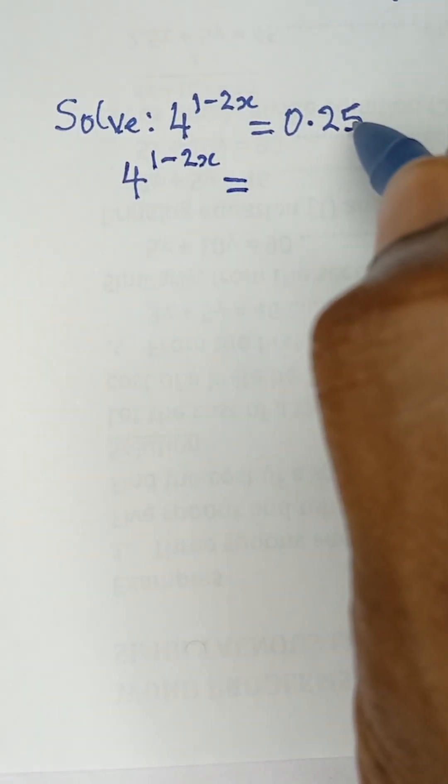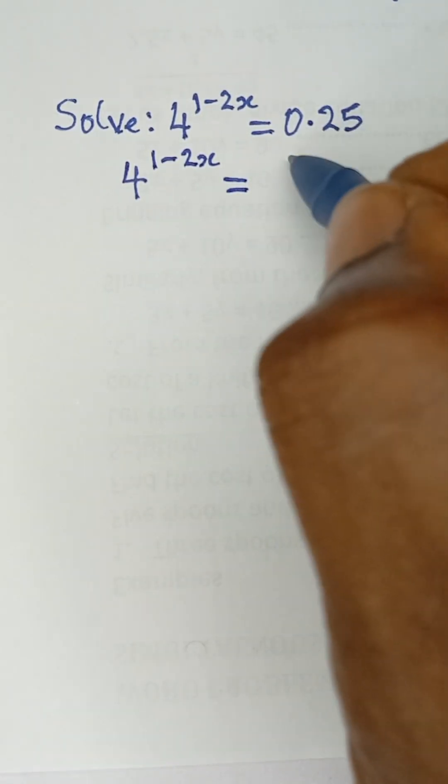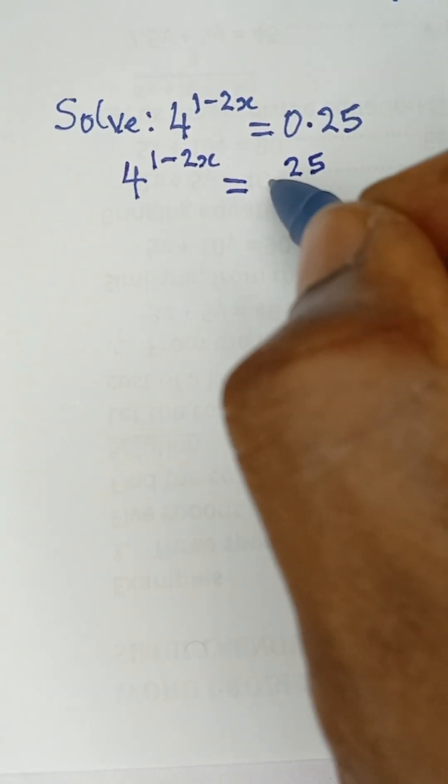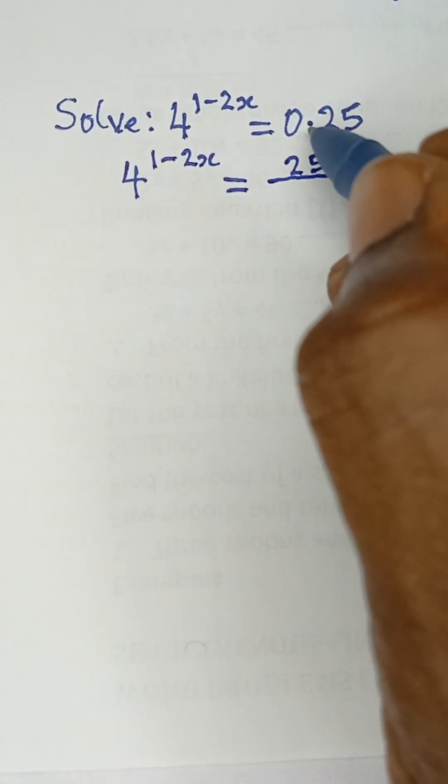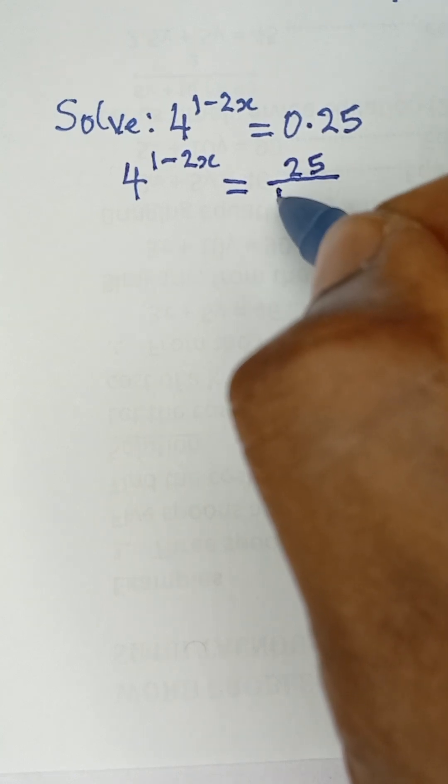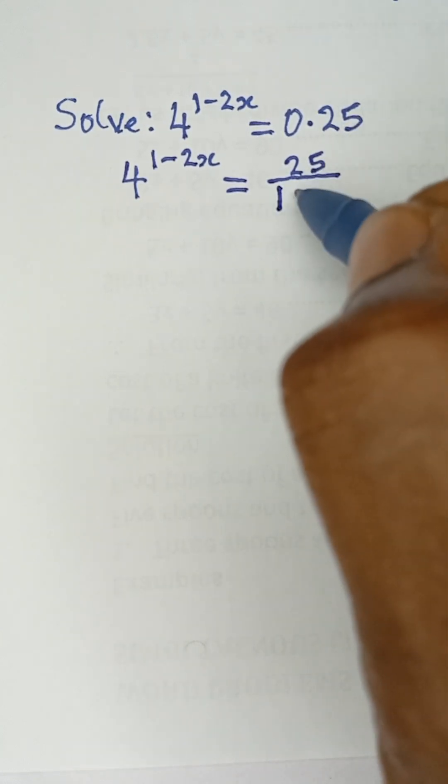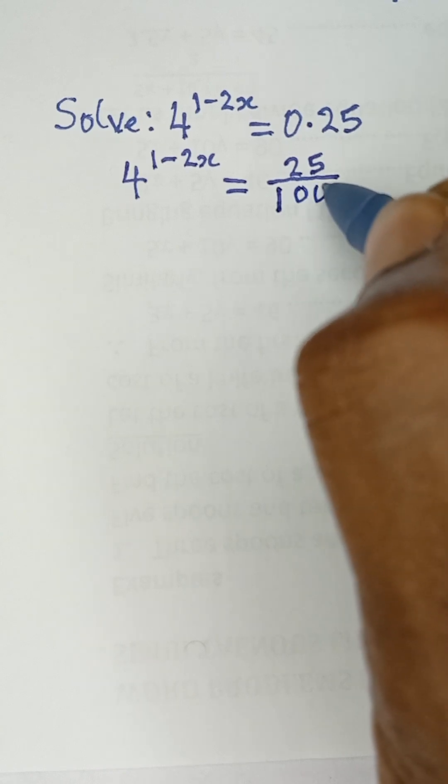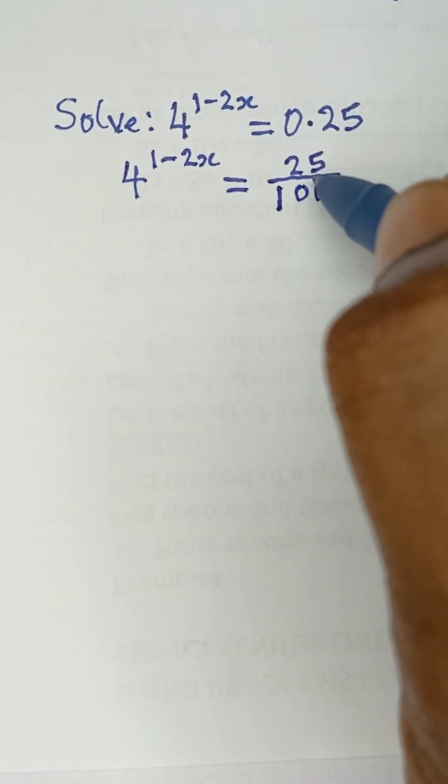We can express this as a fraction. That will be writing 25 as a whole number, and then we'll say all over... this decimal point, we'll present it as the number 1, and then these two numbers become 0. So that is how to express decimal in fractional form.